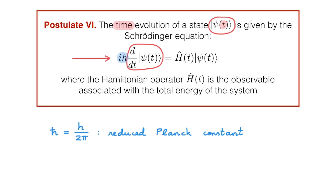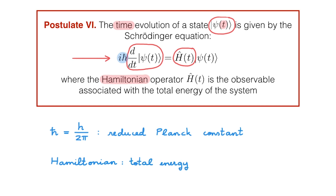This time derivative is then equal to the right-hand side, which is an operator H acting on the state psi. This operator plays a key role in quantum mechanics and is called the Hamiltonian. We know that operators in quantum mechanics are used to describe physical properties, so the central question to ask is what physical property does the Hamiltonian represent? The answer is that the Hamiltonian represents the total energy of the system. So the Schrödinger equation tells us that the time evolution of the system is governed by the total energy of the system.